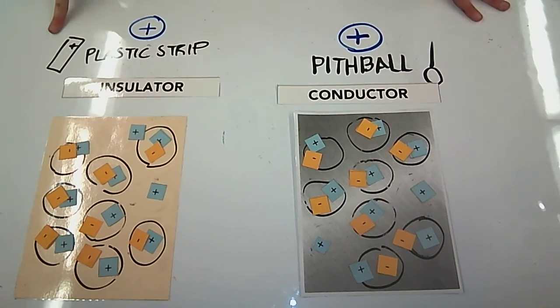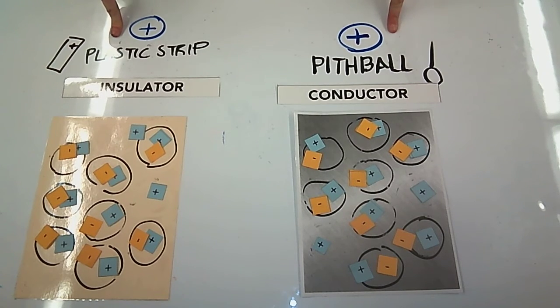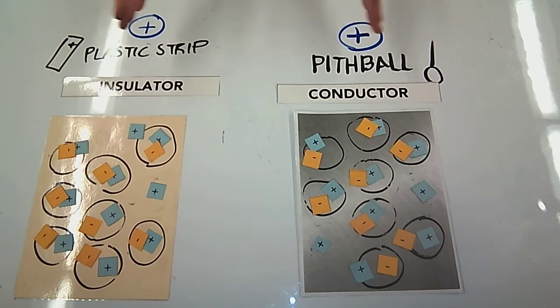So then there's the question: after they touch, what's going to happen? Well, if my plastic strip is positive and my pith ball is positive, likes are going to repel. So if I were to bring these close to one another again, they would repel each other.